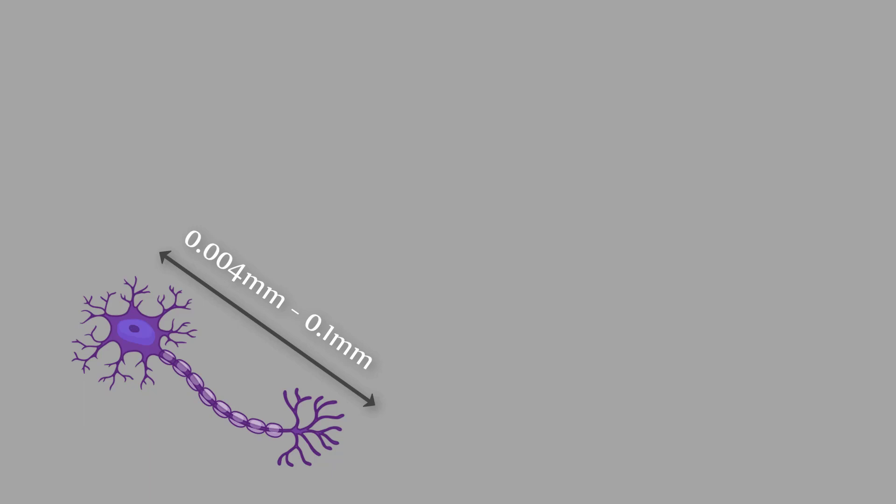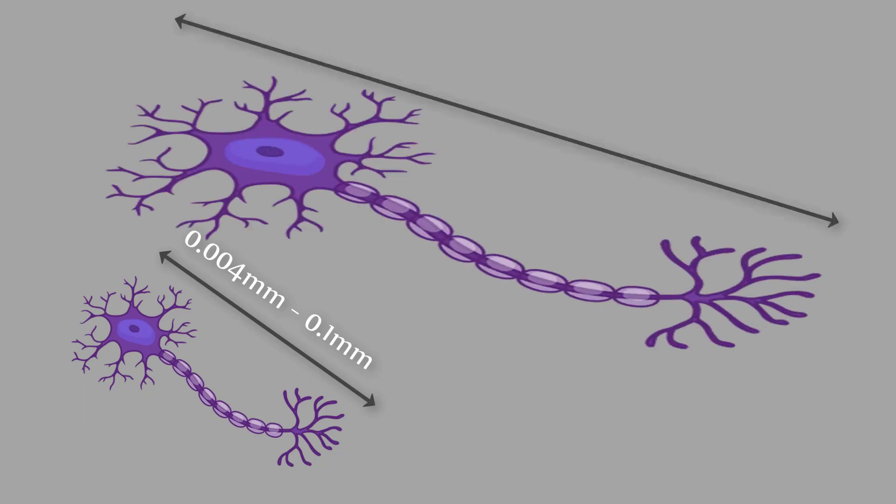The longest neuron is the one starting from the base of the spine that goes all the way to the toes and has been calculated to be more than a meter long, specifically 1.5 meters in adults, that is 5 feet.